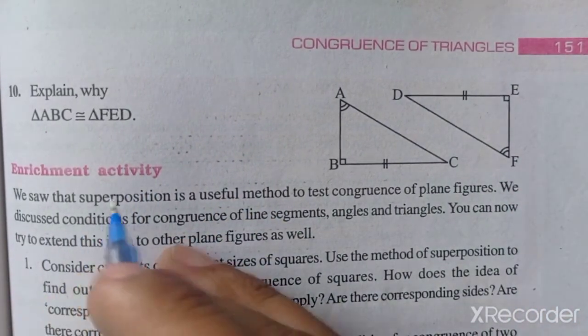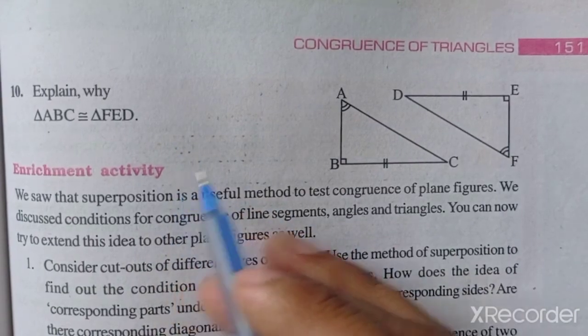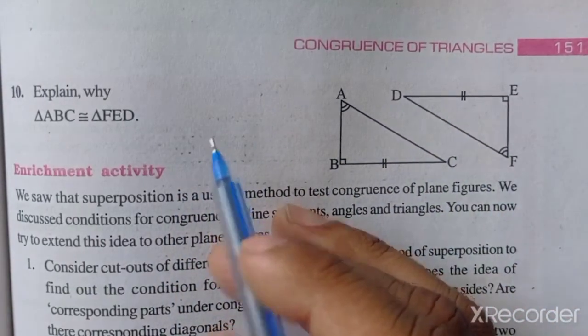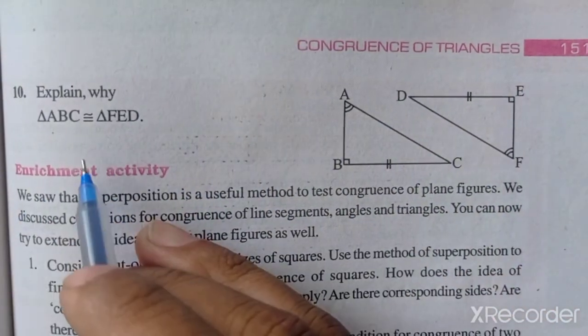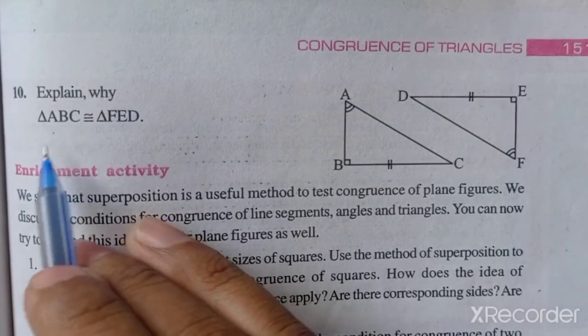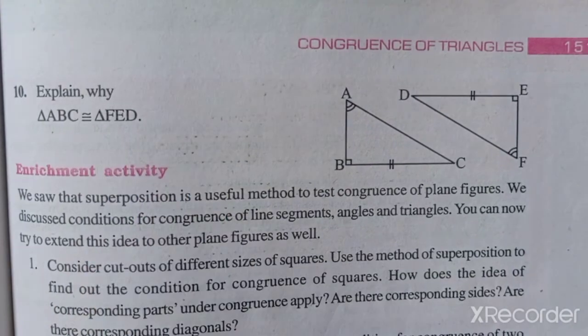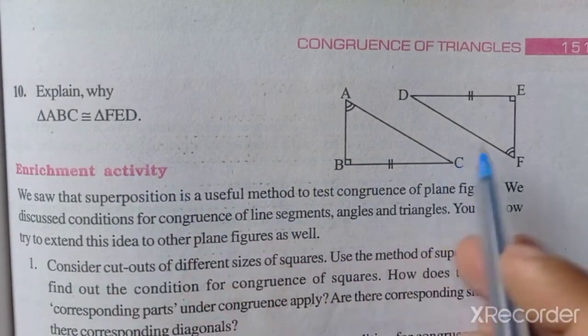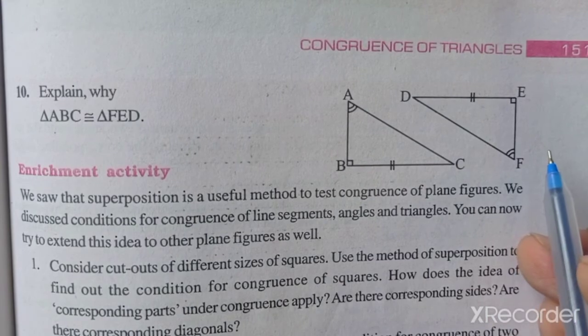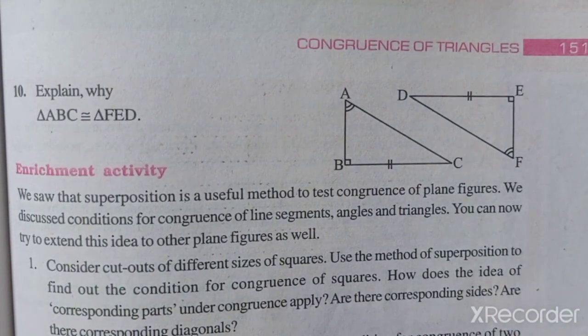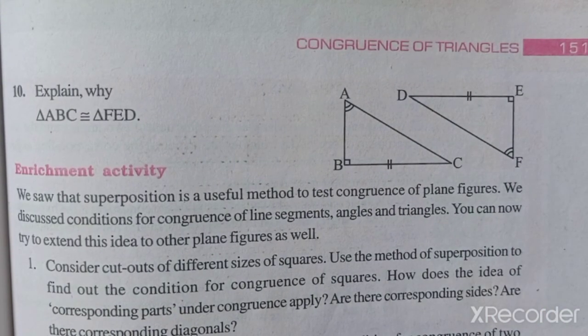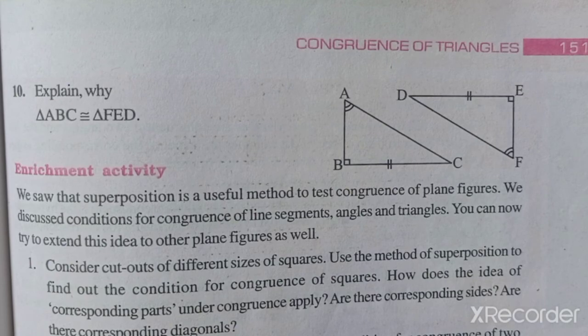You have to write step by step. This is the method. You have to write here triangle ABC which is congruent to triangle FED. This question is explained. You can write this in your house, and we will meet in the next video. Thank you.